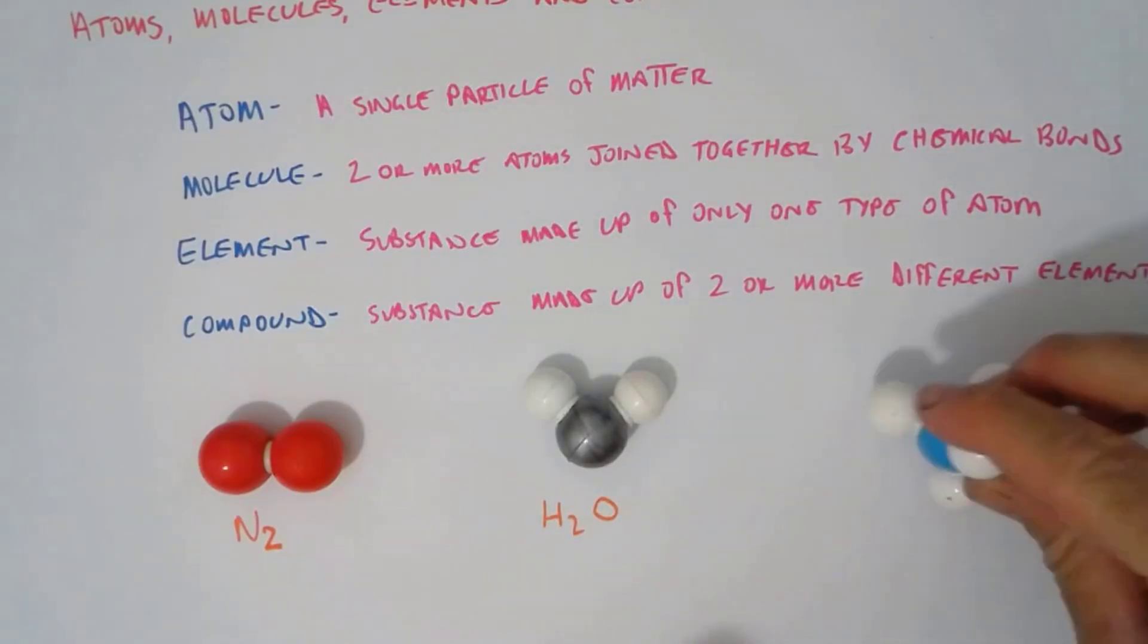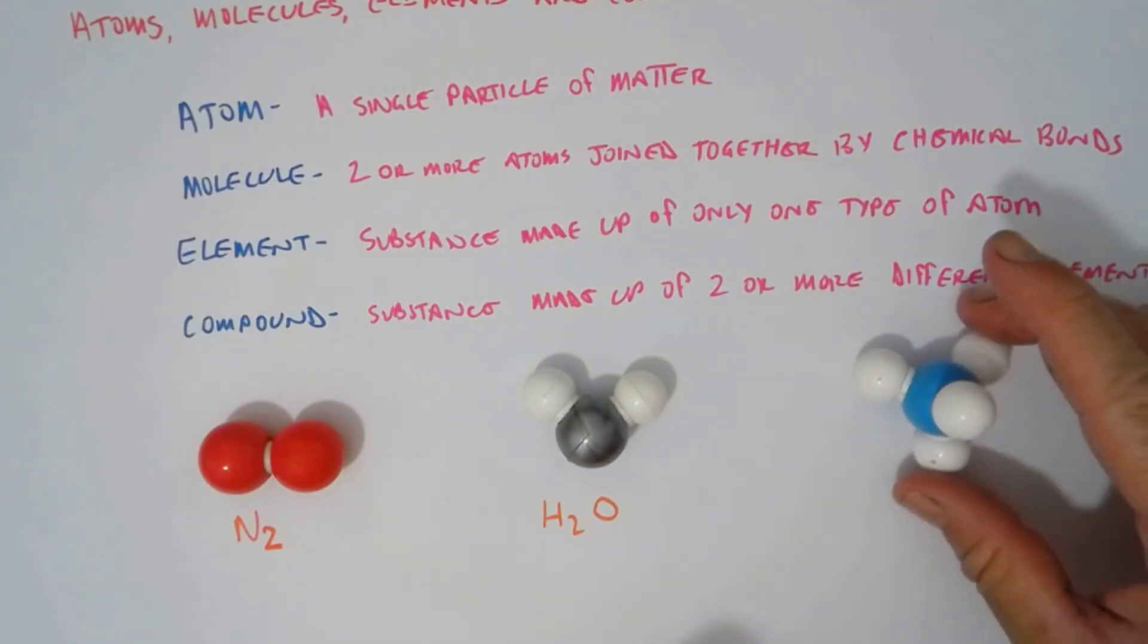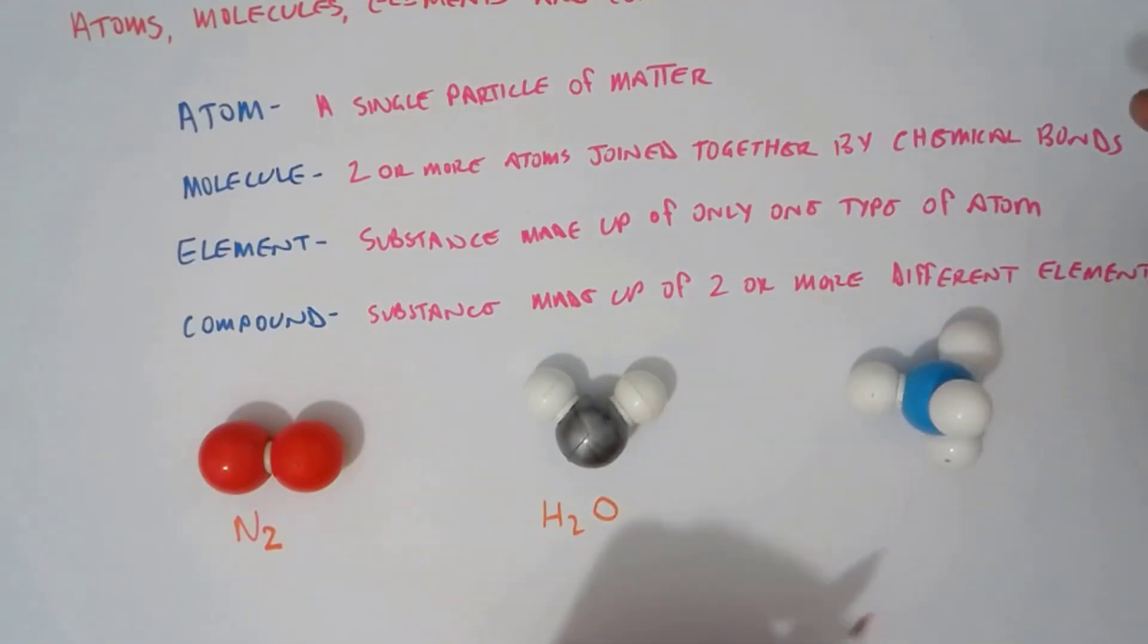And here we have methane. Methane is CH4. That means there's four hydrogen, one, two, three, four, and one carbon. So this is called the chemical formula and it's a way of being able to express both the type of element and the number of atoms of each type.